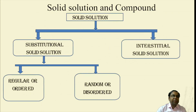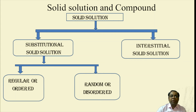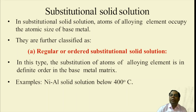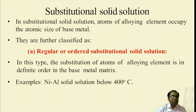The composition of the alloying element may vary, but the structure should be similar to the base metal. Solid solutions are distinguished into substitutional solid solution and interstitial solid solution. Substitutional solid solution is further subdivided into two categories: regular or ordered type, and random or disordered type. The atoms of the alloying element occupy the atomic sites of the base metal.